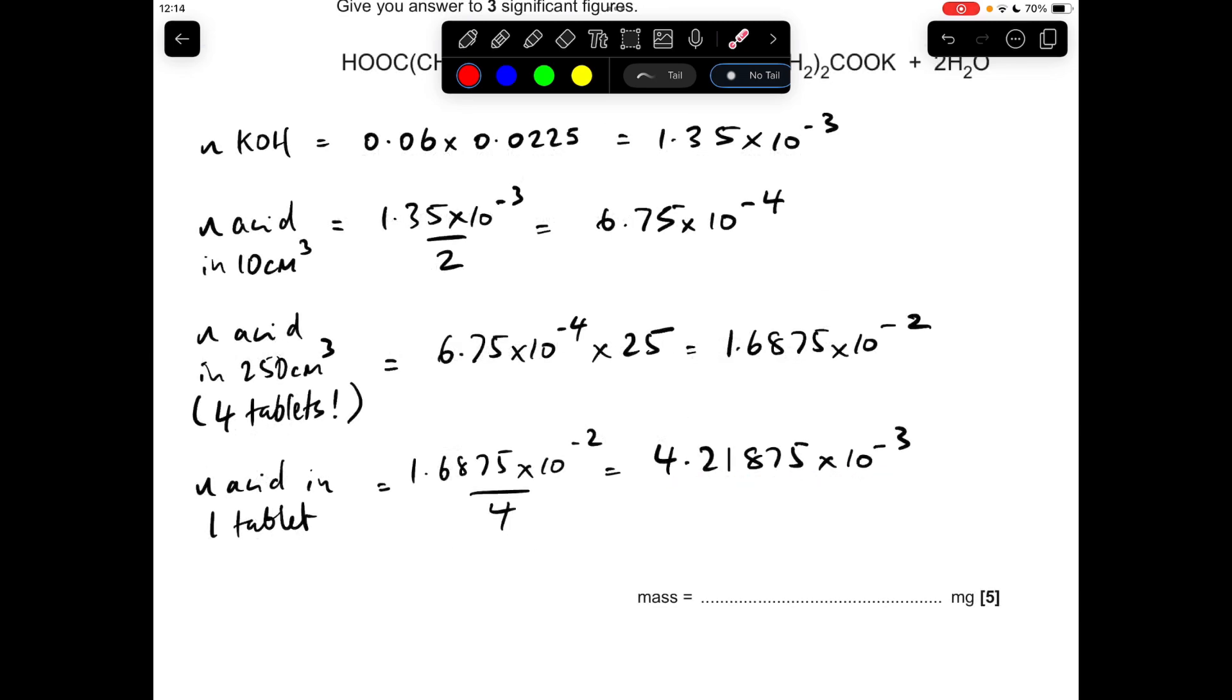So all we need to do now is multiply by the MR. That's going to give us the mass in grams, which comes out at 0.4978 grams. We need to put that into milligrams and give it to three significant figures. So we multiply by a thousand to get it into milligrams. So it's going to be 498 to three significant figures.